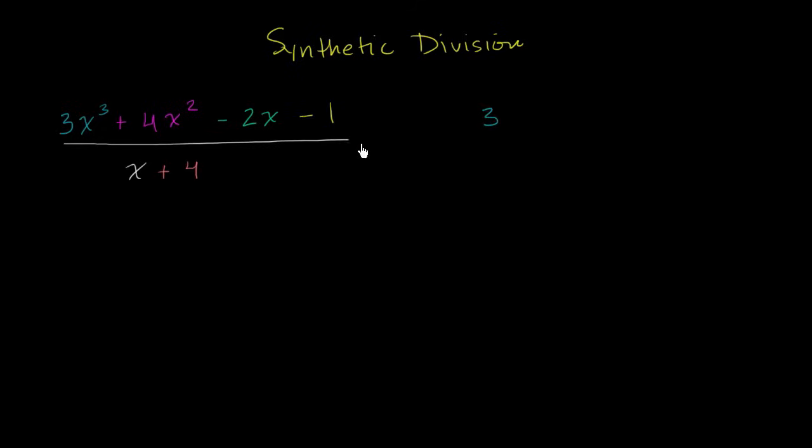So we have a 3, we have a 4, it's a positive 4. We have a negative 2, and a negative 1. And you'll see different people draw different types of signs here, depending on how they're doing synthetic division, but this is the most traditional. And you want to leave some space right here for another row of numbers.